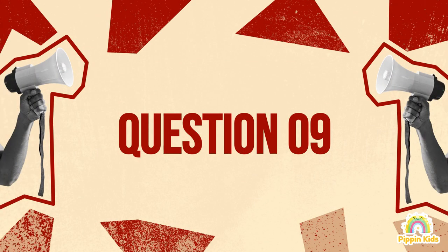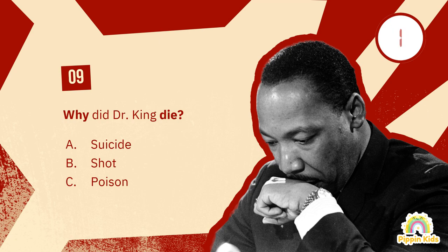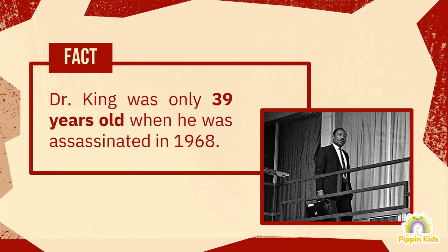Question number nine: why did Dr. King die? A) Suicide. B) Shot. C) Poison. The answer is B, shot. Dr. King was only 39 years old when he was assassinated in 1968. Despite his young age, he had accomplished a great deal and had become one of the most influential and respected leaders of the civil rights movement.